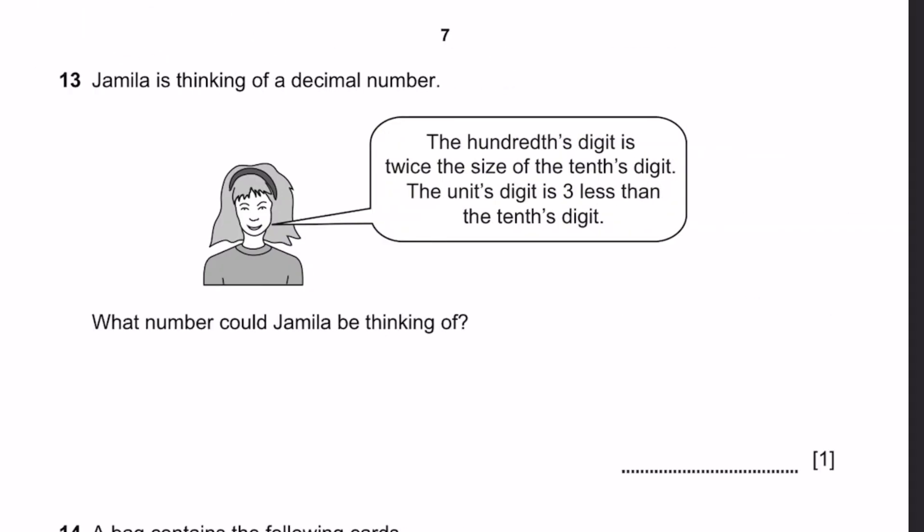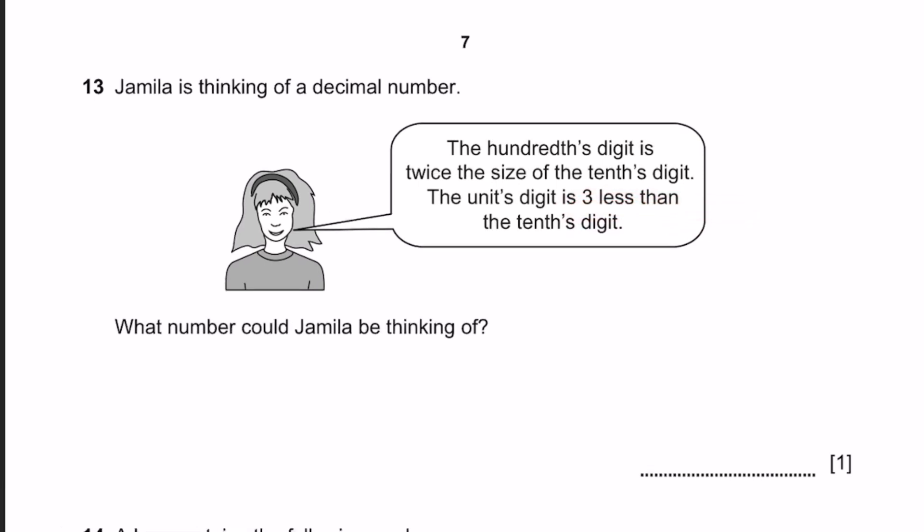Question 13. Jamila is thinking of a decimal number. What number could Jamila be thinking of? The hundredth digit is twice the size of the tenths digit, and the unit's digit is 3 less than the tenths digit. We know there are three digits: unit, tenth, and hundredth. Let's say the unit digit is 1. The tenths digit is 3 more than the units, so 1 plus 3, which is 4. The hundredth is twice the tenths digit, which means 4 into 2, which is 8.